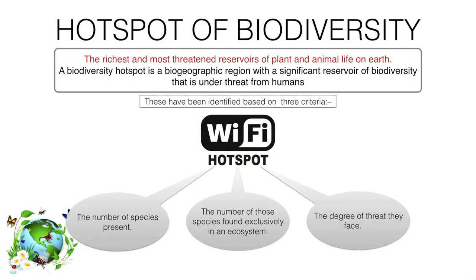Biodiversity hotspots are some of the places which are the richest and most threatened reservoirs of plant and animals on the earth. They are rich in different types of animals and plants, and they are also the most threatened reservoirs. That's why these places are called biodiversity hotspots. A biodiversity hotspot is a geographical region in which a significant reservoir of biodiversity is under threat from human beings.